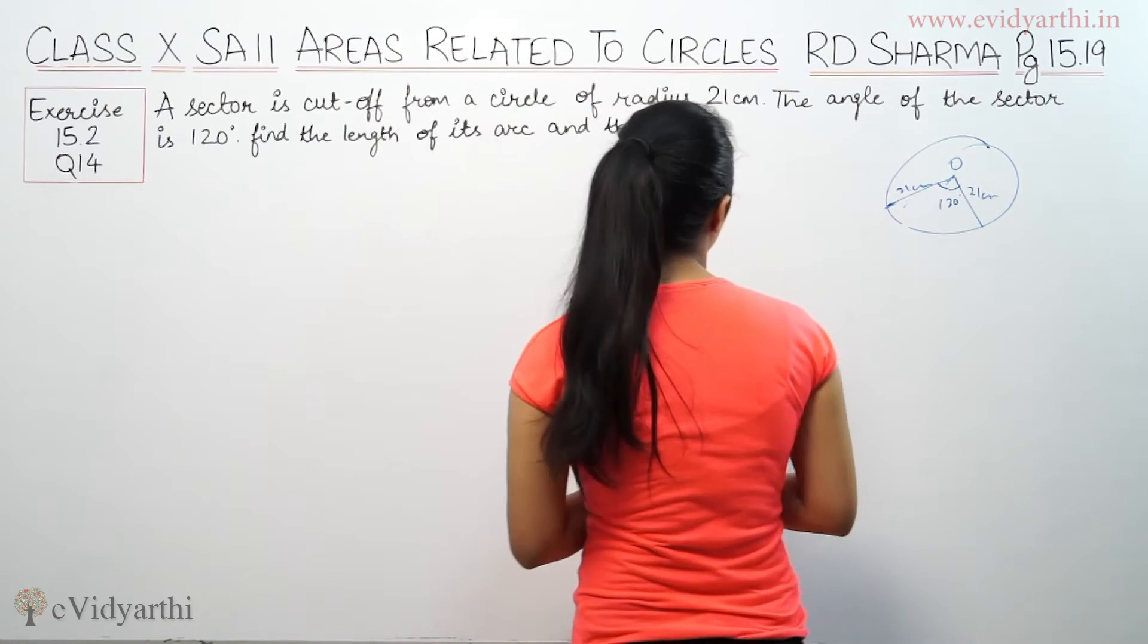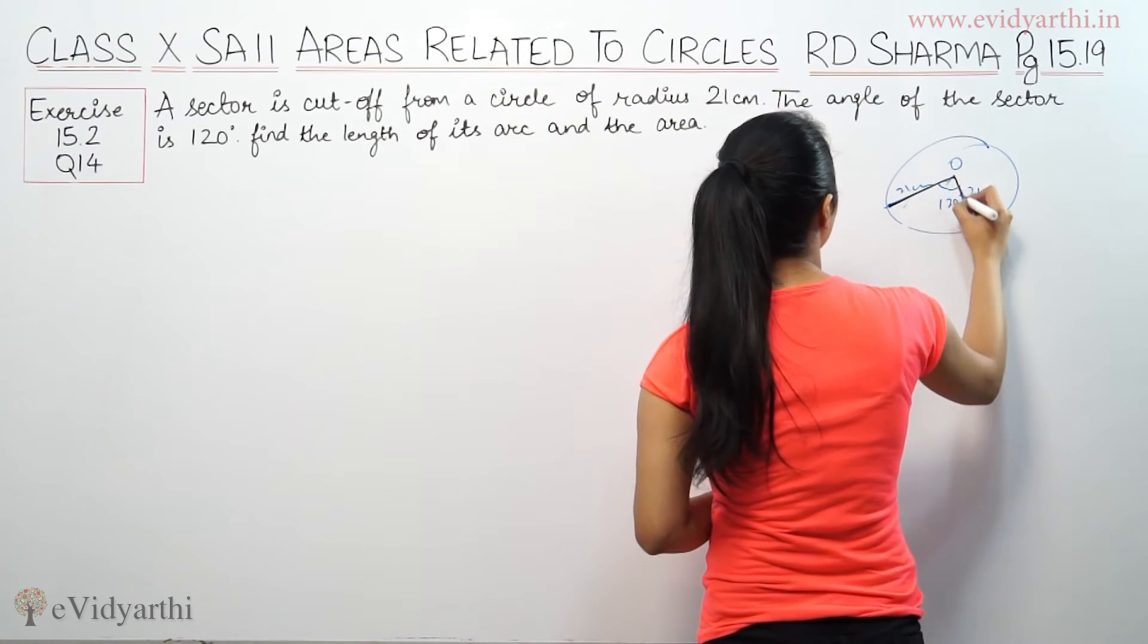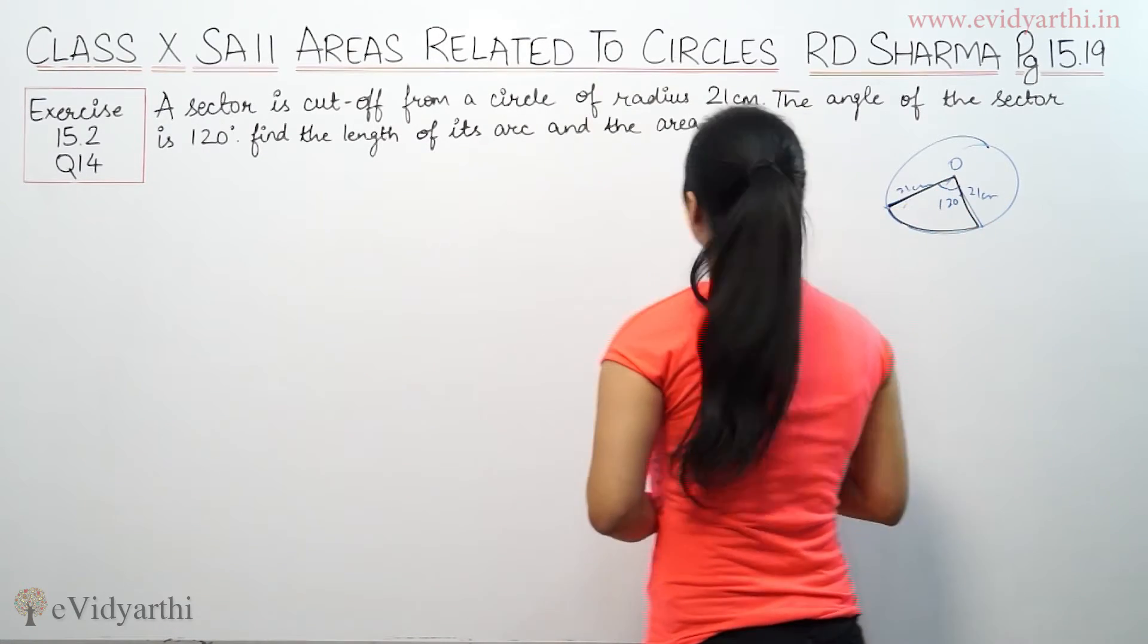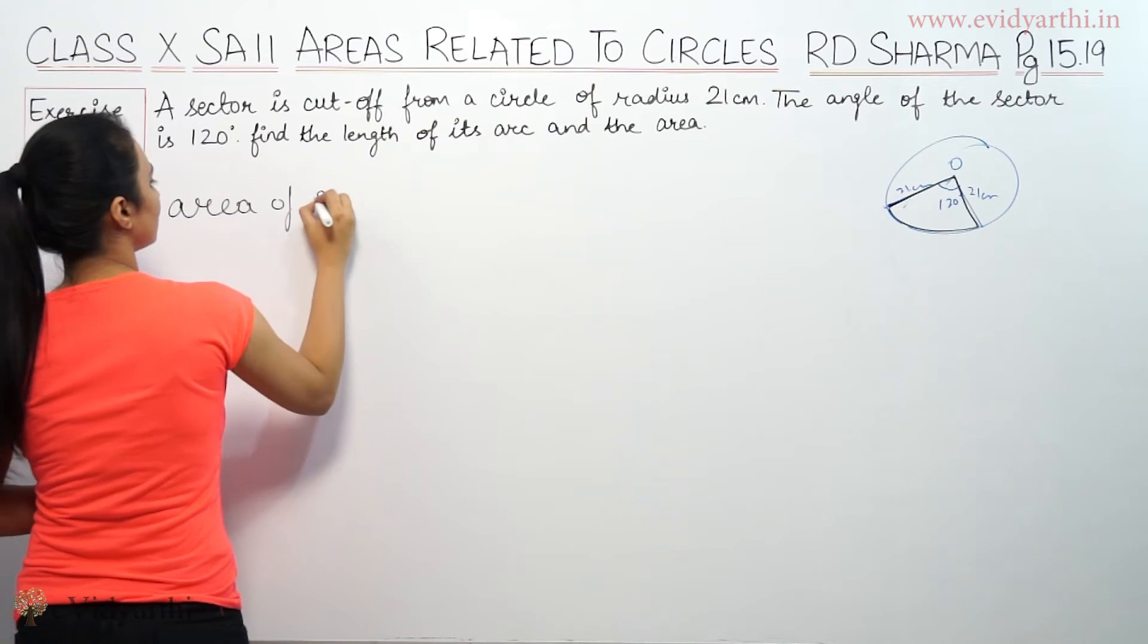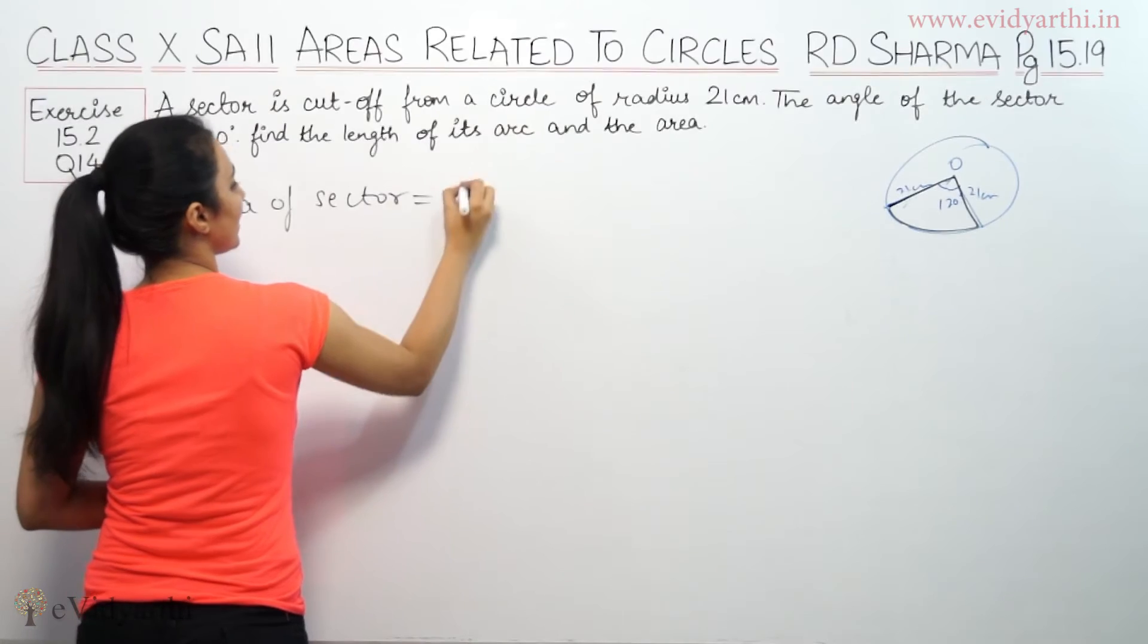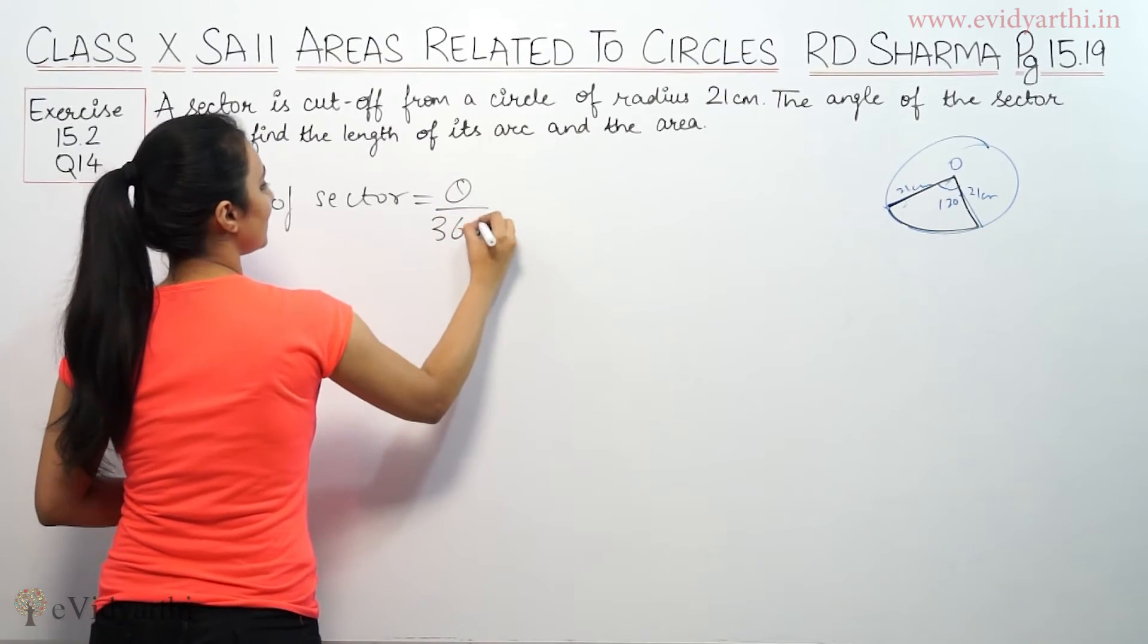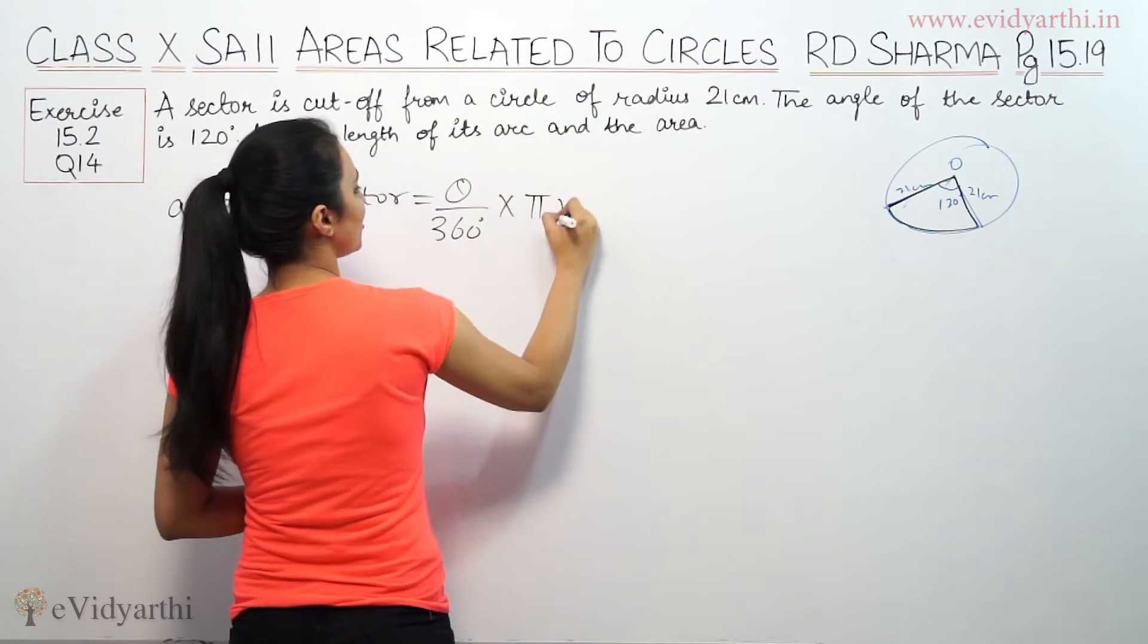Find the length of arc and the area. Let's find the area of the sector. So area of sector is theta by 360 degree into pi R square.